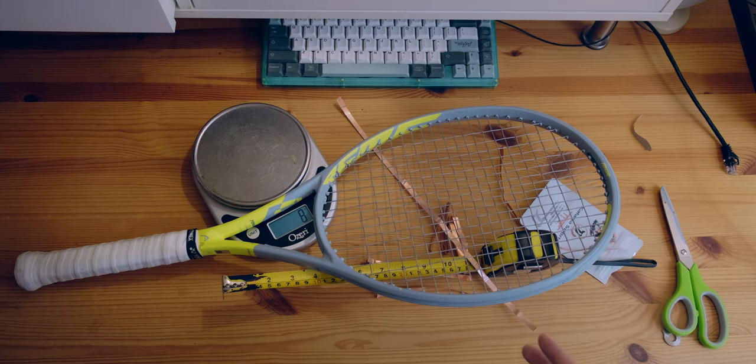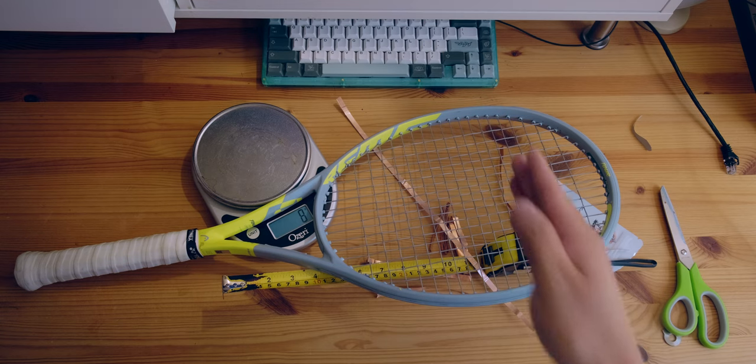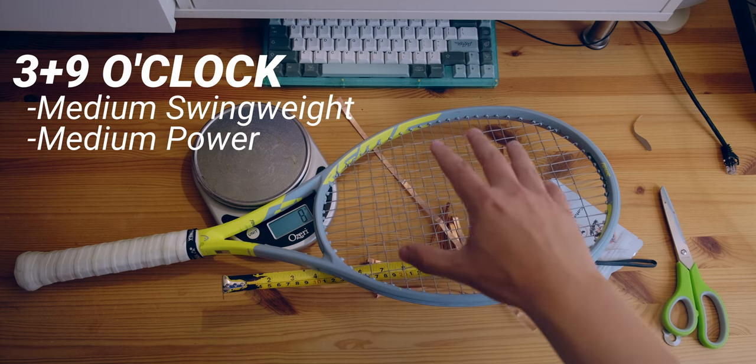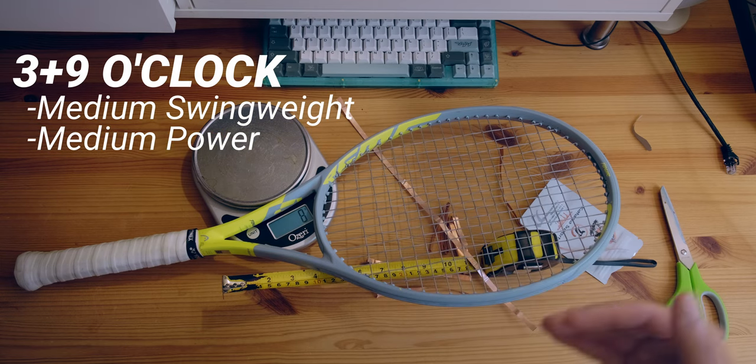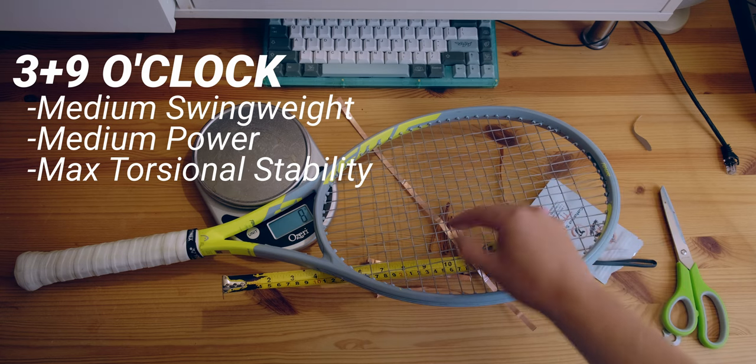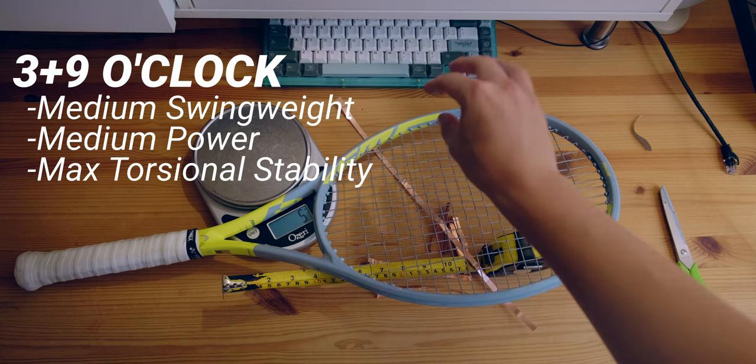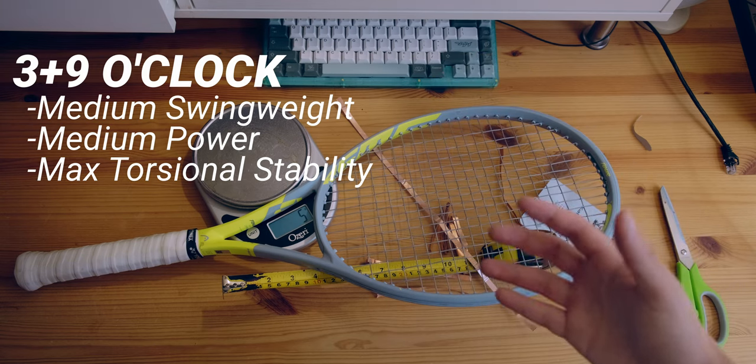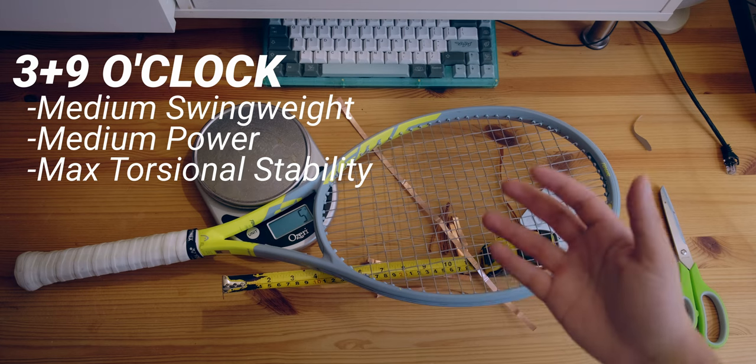The next location that's very popular is 3 and 9 o'clock. So that is of course going to increase the swing weight because you're putting weight towards the tip, but it really more increases the torsional stability of the racket. So if you hit the ball off center, like towards here or towards here, the weight out there is going to give you a more stable feel. We could also call this increasing the twist weight.